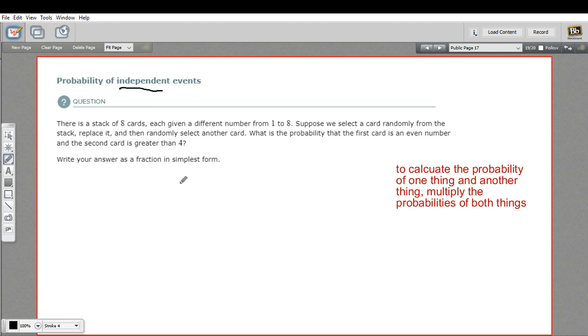Let's read this problem and see if we can calculate the probability. It says there's a stack of eight cards, each given a different number one to eight. Suppose we select a card randomly from the stack, replace it, and then randomly select another card. What is the probability that the first card is an even number and the second card is greater than four?